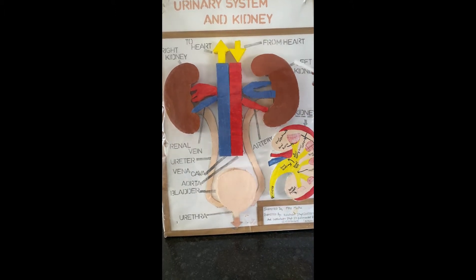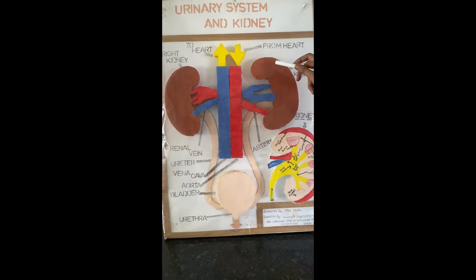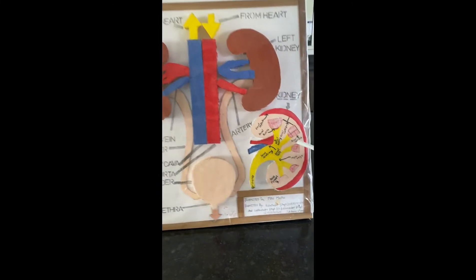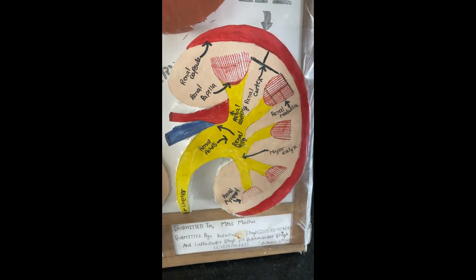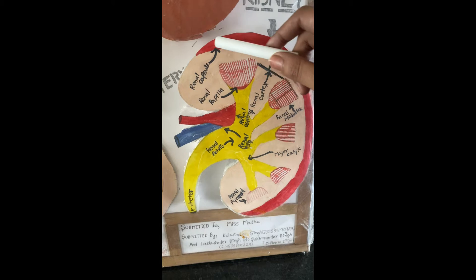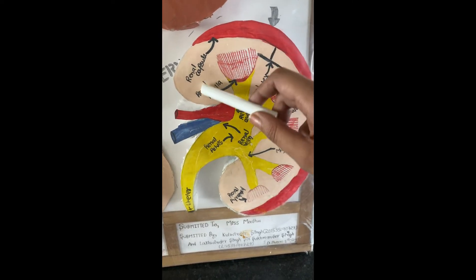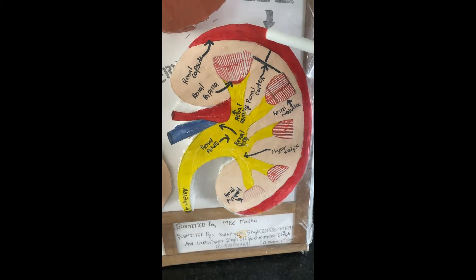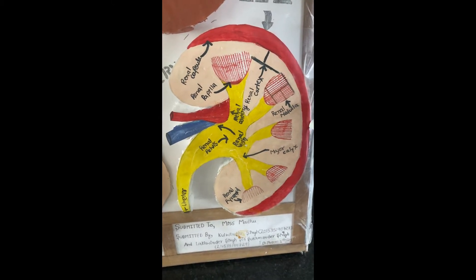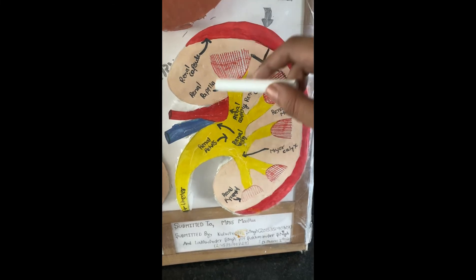Now let us discuss each part one by one. First, let us focus on the kidney. The kidney is generally divided into two parts. The outer portion is known as the renal cortex, and the inner portion is known as the renal medulla. The outer portion is shown in red color, and the skin color shows the renal medulla.